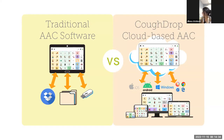CoughDrop isn't just another AAC app — it offers open standards and open access so communicators are free to build a solution that works best for them. It's in a class of its own as it can run on just about any type of device because it is cloud-based, meaning account information is saved in the cloud rather than on a single device. CoughDrop is built to run on all major devices including desktop computers and laptops, iPads and iPhones, Android tablets, phones, Kindles, Chromebooks, and Windows devices. The interface stays consistent across devices so users can swap out devices with minimal interruption or confusion.